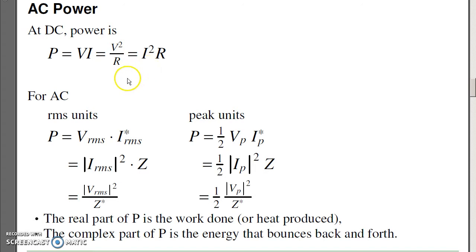For AC, depends upon your units. In AC, I've got peak to peak, peak, and RMS. If you're using RMS units, the equations are just like they are at DC. Power is volts times amps. We're using the RMS voltage and RMS current. The slight catch is the current is the complex conjugate of current.